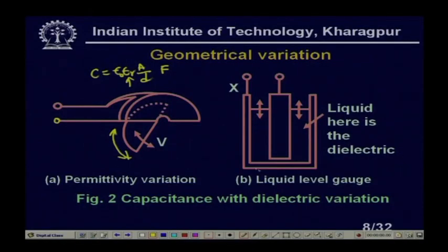Another example is a liquid level gauge. It is cylindrical in shape with an inner rod and an outer cylinder acting as the two plates. When liquid is poured in, the dielectric medium between the plates consists of two different materials: air and liquid. As the tank fills, there is more liquid and less air between the plates, so the dielectric medium changes, changing the capacitance. This can measure the level of liquids and also solids in powder or granular form.